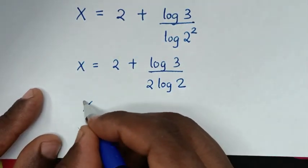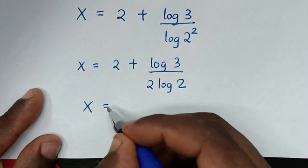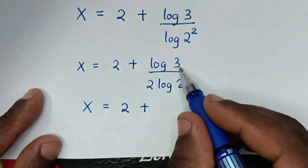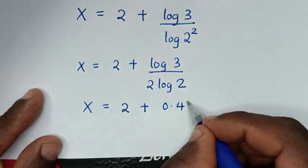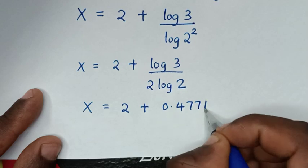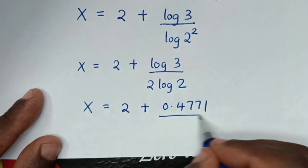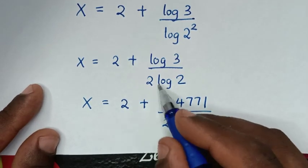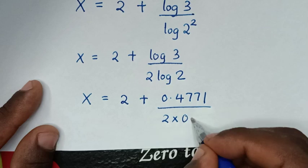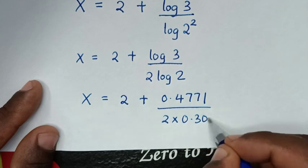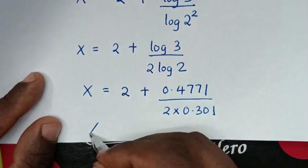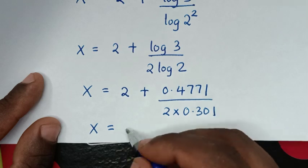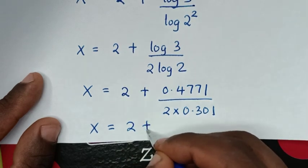Then, it will be x is equal to 2 plus log of 3, which is 0.4771, over 2 times log of 2, where log of 2 is 0.301. So it will be x is equal to 2 plus 0.4771 over 2 times 0.301.